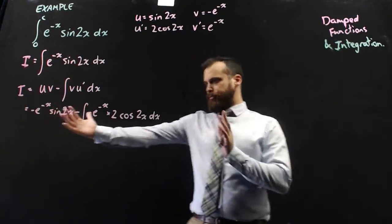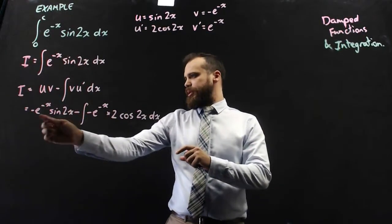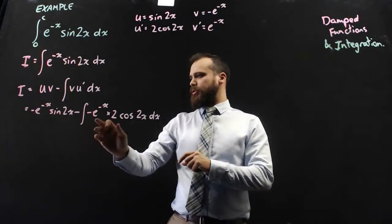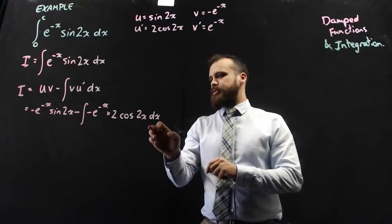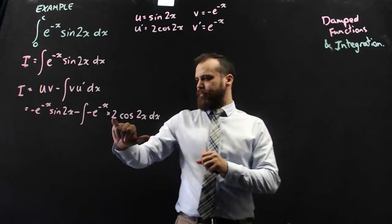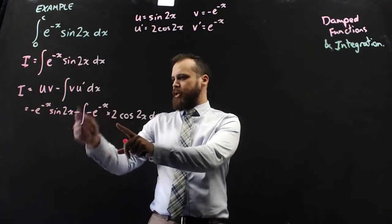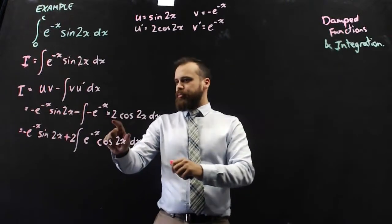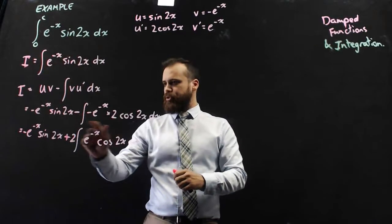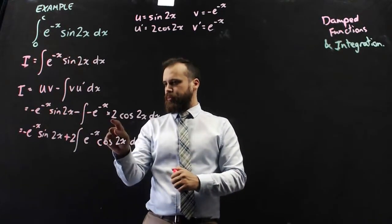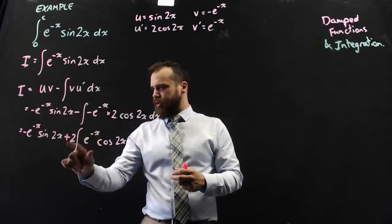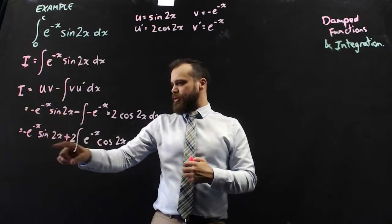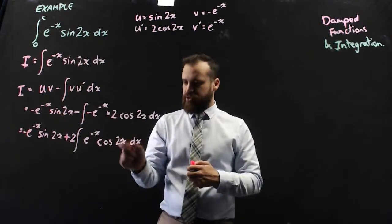Substituting into the formula: u is sine 2x and negative e to the negative x is v — I've just swapped them around to make it a neat function. Minus the integral of negative e to the negative x times 2 cos 2x with respect to x. Because 2 is just a multiplier we can take it outside the integral, and we also bring out the negative 1, so we're really bringing out negative 2, which turns that negative into a positive. So i equals negative e to the negative x sine 2x, plus 2 times the integral of e to the negative x cos 2x with respect to x.